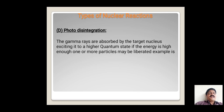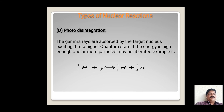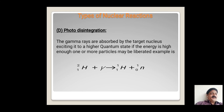The next type of nuclear reaction is photo disintegration. Gamma rays are absorbed by the target nucleus, exciting it to a higher quantum state. If the energy is high enough, one or more particles may be liberated. For example, a gamma particle is incident on a hydrogen atom, and the product is hydrogen plus nitrogen — meaning particles are liberated from the excited nucleus. Such types of nuclear reactions are called photo disintegration nuclear reactions.